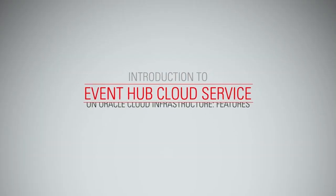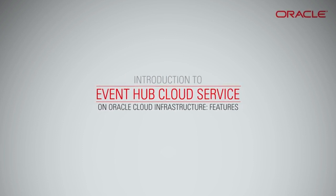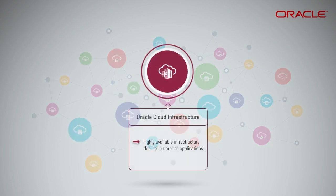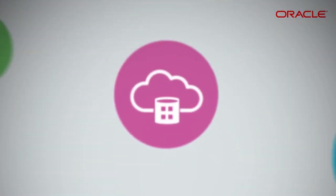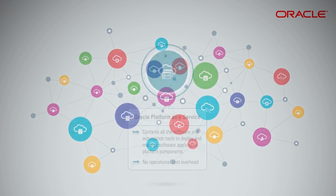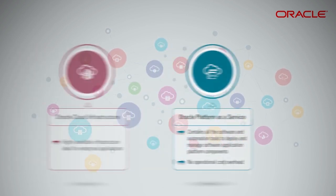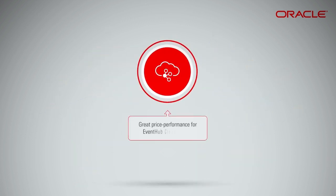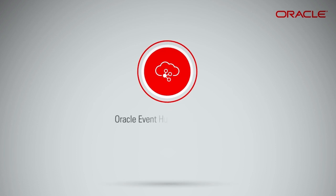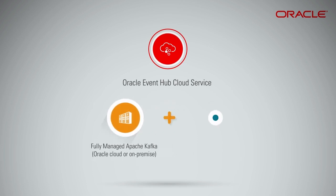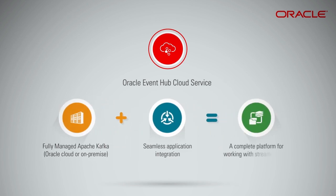Introduction to Event Hub Cloud Service on Oracle Cloud Infrastructure. Oracle Cloud Infrastructure's highly available, multi-region infrastructure is ideal for enterprise applications. Oracle Platform as a Service offerings contain all the software and automation tools you need to deploy and manage software application platform components without the operational cost overhead. This adds up to great price performance for Event Hub Cloud Service. Oracle Event Hub Cloud Service combines the fully managed Apache Kafka with seamless application integration to deliver a complete platform for working with streaming data.